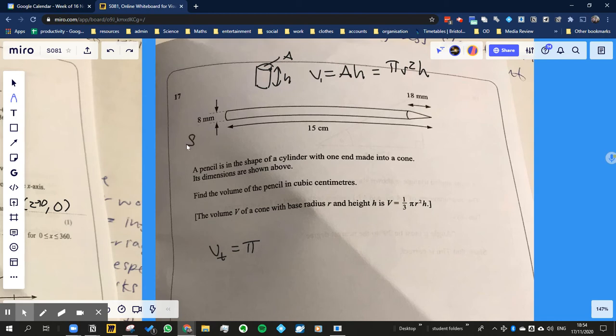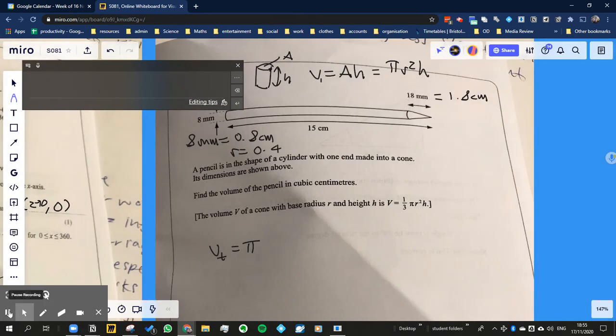18 millimeters is equal to 1.8 centimeters. And then the other trick they've done is that this would be the diameter, not the radius. So the radius would be equal to 0.4 centimeters.